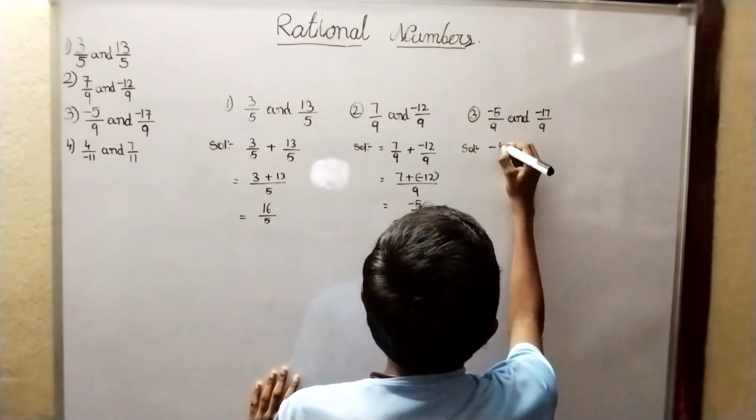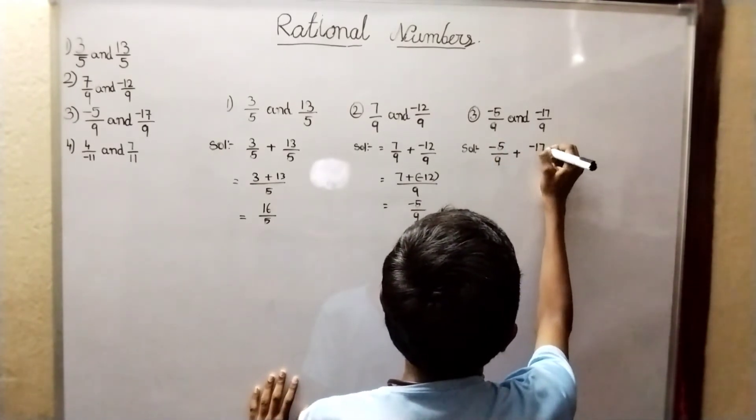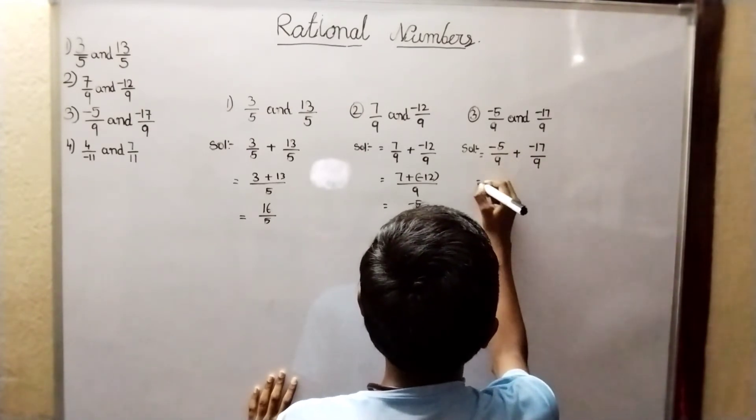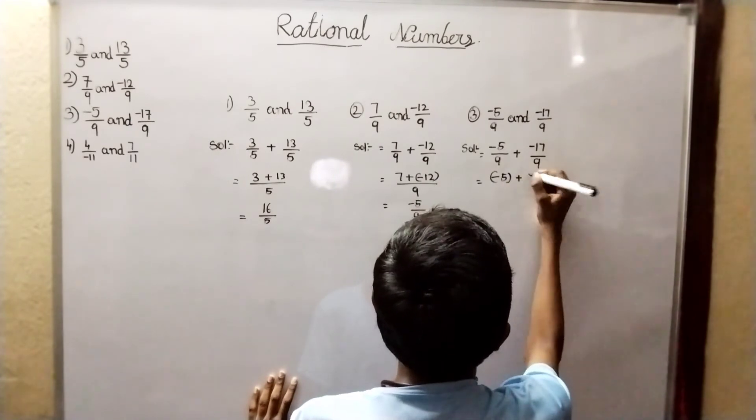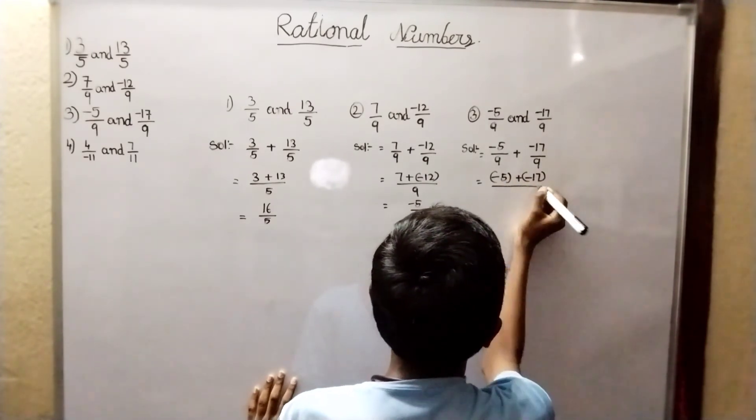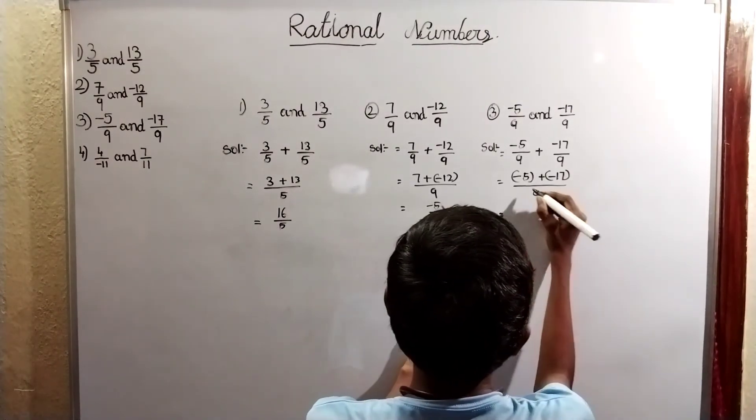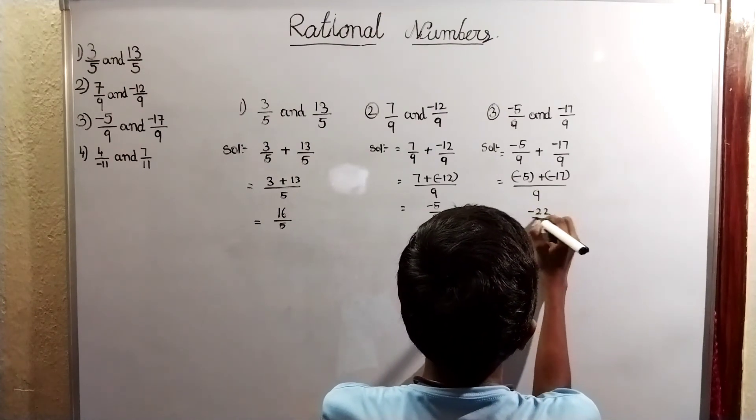Minus 5 bracket plus minus 17 bracket by 9. Minus into minus is plus, which is equal to minus 22. Bye now.